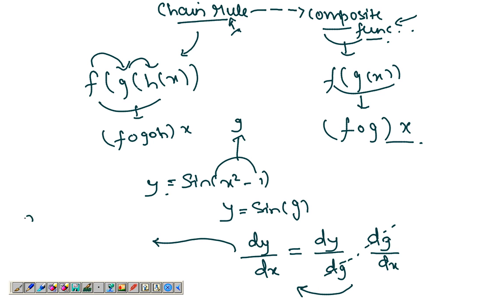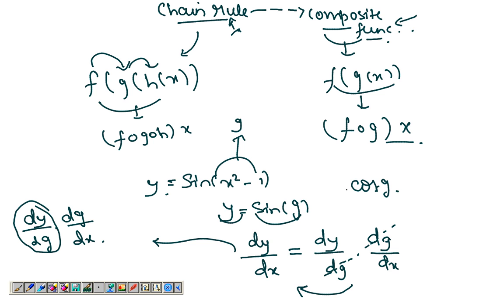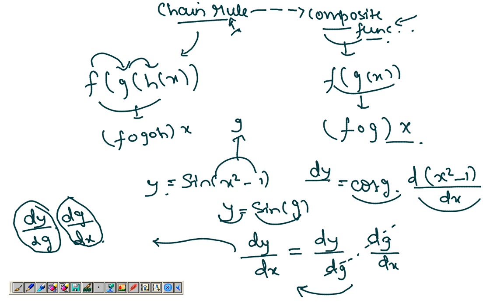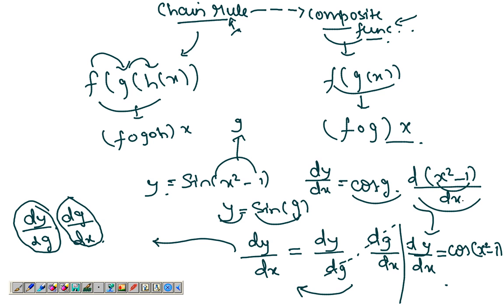So I've rewritten dy/dx as (dy/dg) times (dg/dx). Now dy/dg is simply the derivative of y with respect to g, which is cos(g). And dg/dx is the derivative of g — where g = x² - 1 — with respect to x. So dy/dx = cos(x² - 1) times 2x. That's your answer.